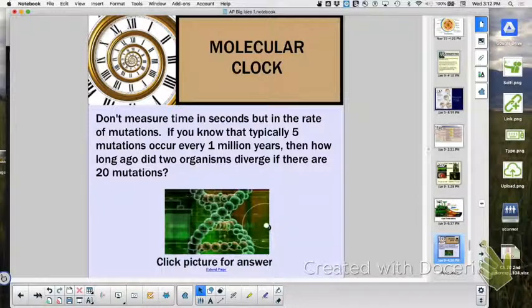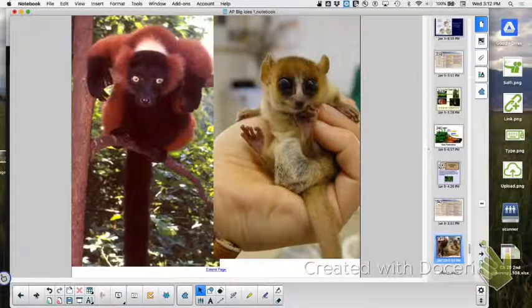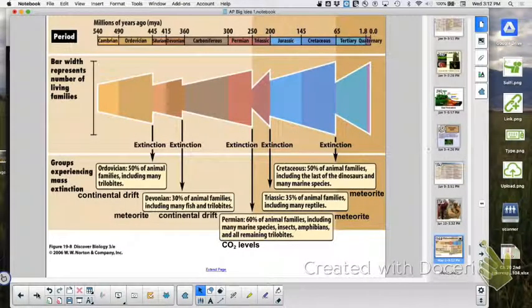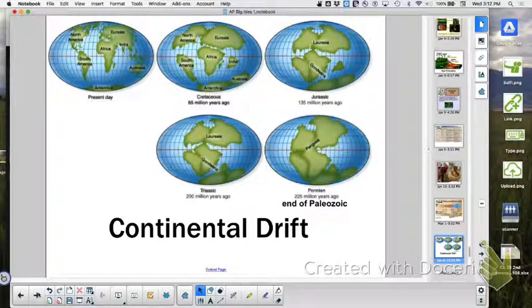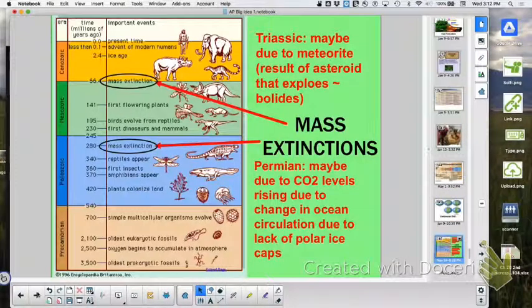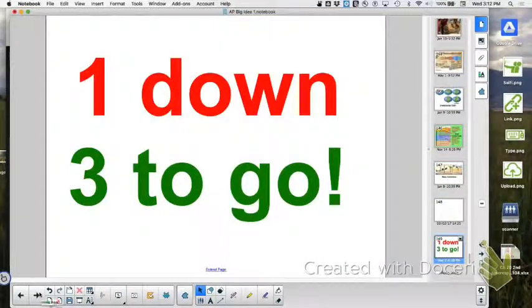Molecular clock, what did we measure when we were looking at our molecular mutations? Rate of mutations. Continental drift explains biogeographical evolution, why we see changes later, like the diversity of mammals, because the continents are separated. Mass extinctions. One big idea down, three to go. Awesome sauce.